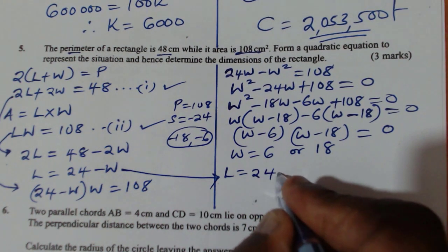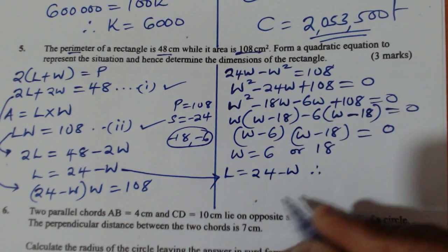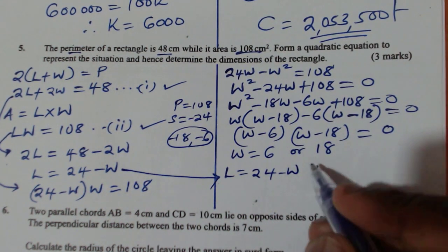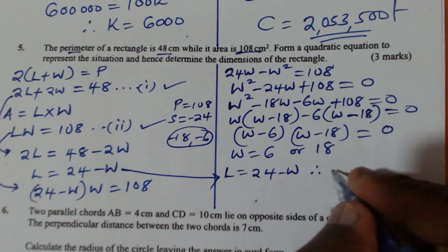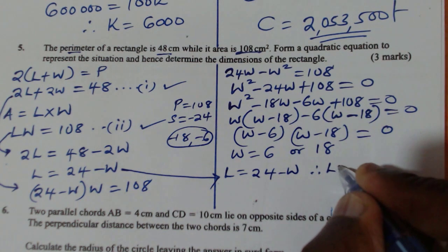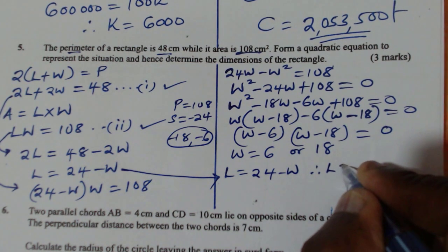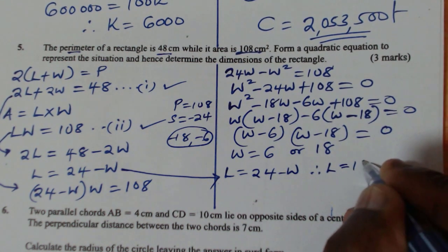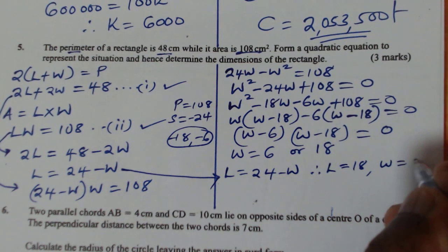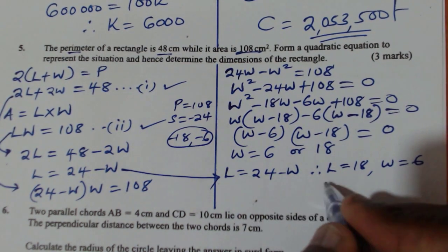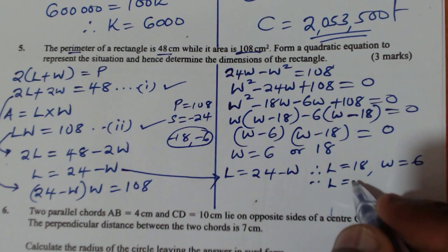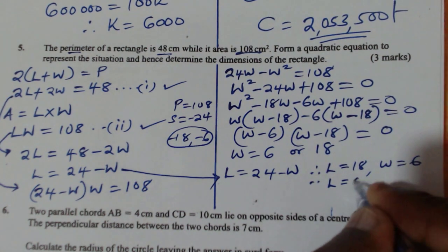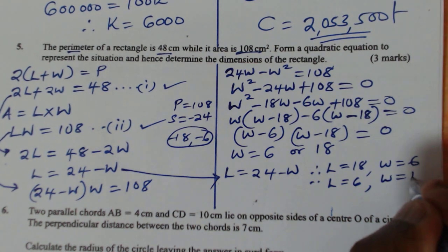So when W is 6, L will be 18, then W will be 6. When W is 18, L will be 6.